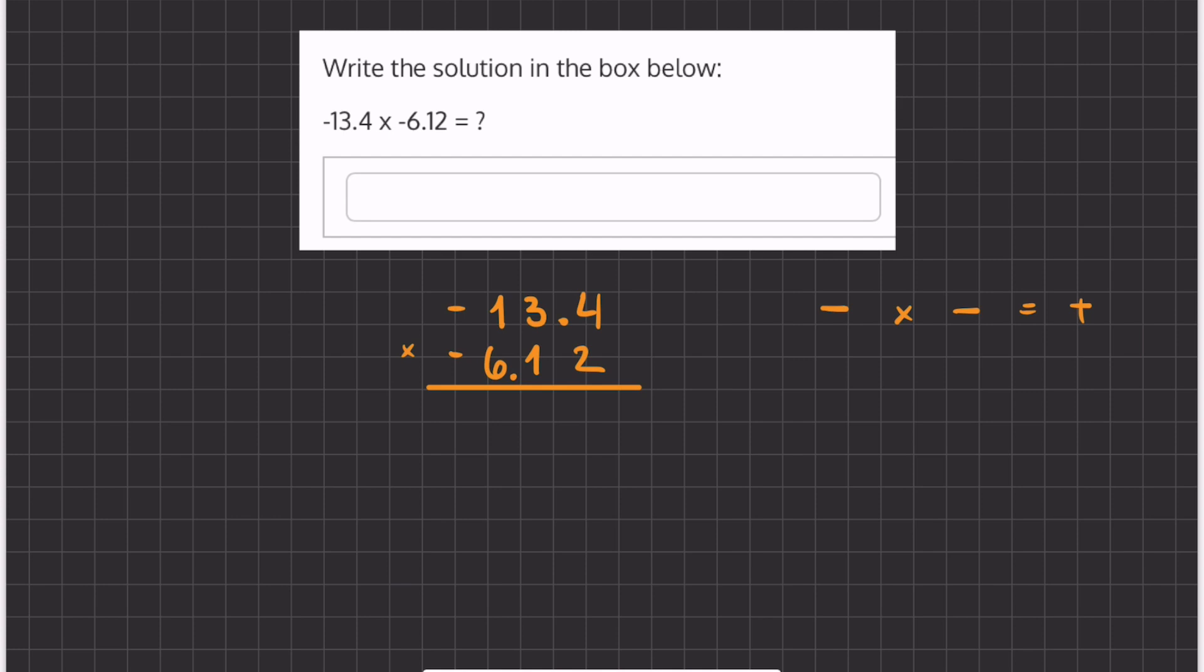We're going to start by multiplying this 2 by all the numbers above. So we have 2 times 4, which is 8, 2 times 3, which is 6, 2 times 1, which is 1.